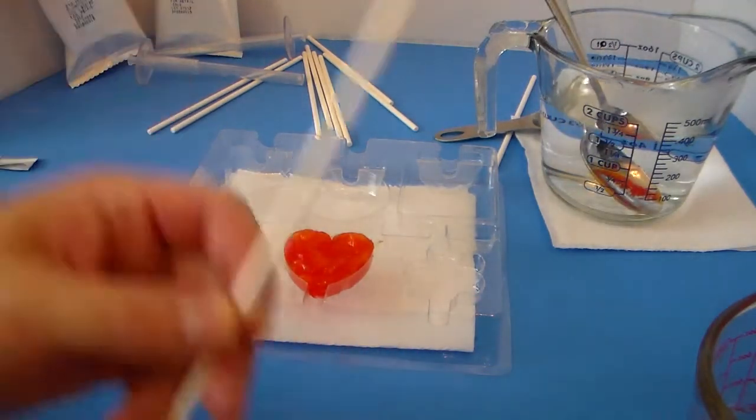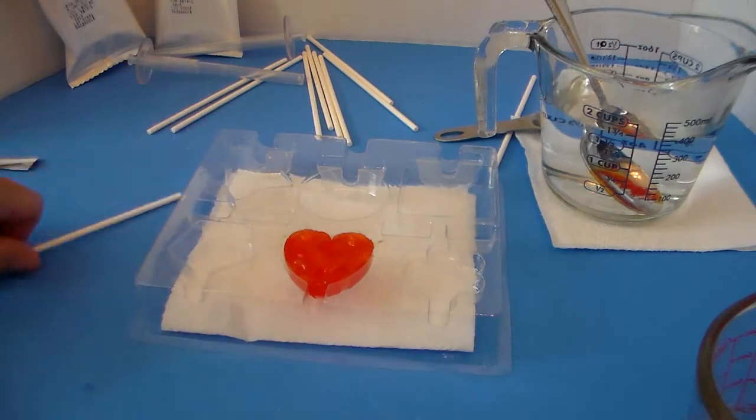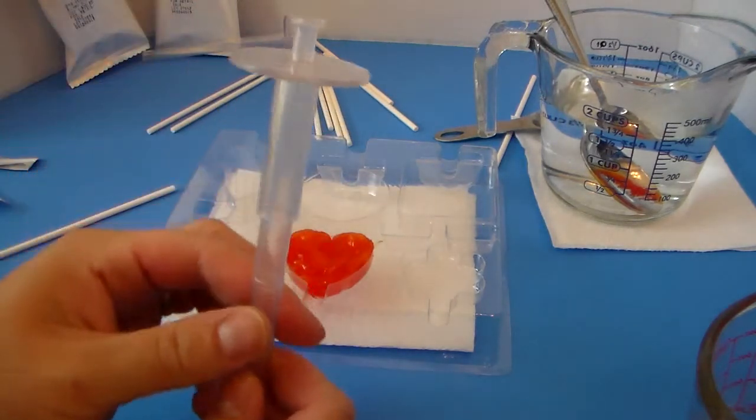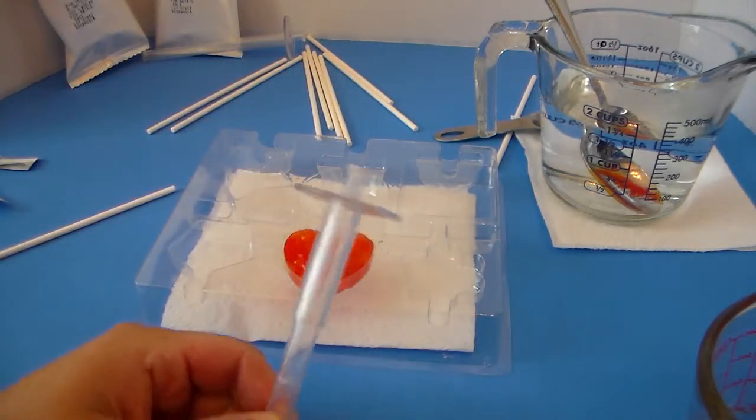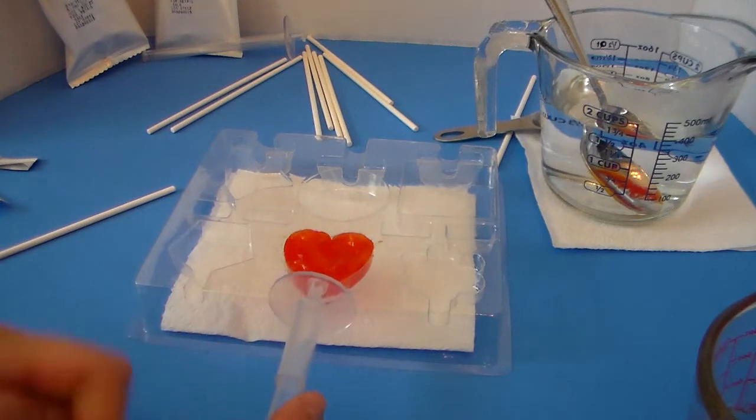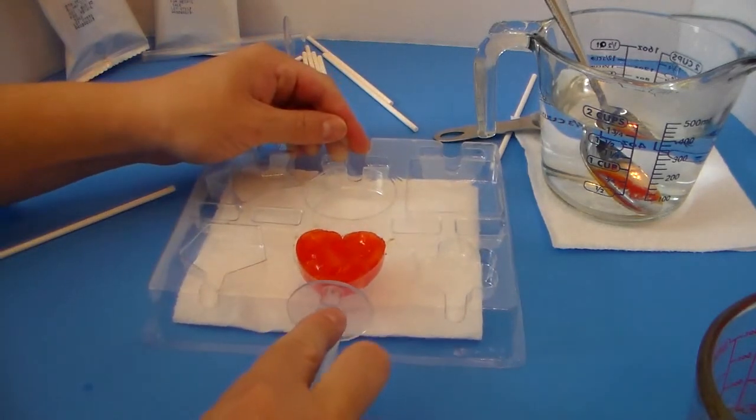So if you wanted to just do a regular one you just stick this right in there. If you want to do one of the glow ones this is the special glow holder. And so you just stick that in here and it kind of pops in.